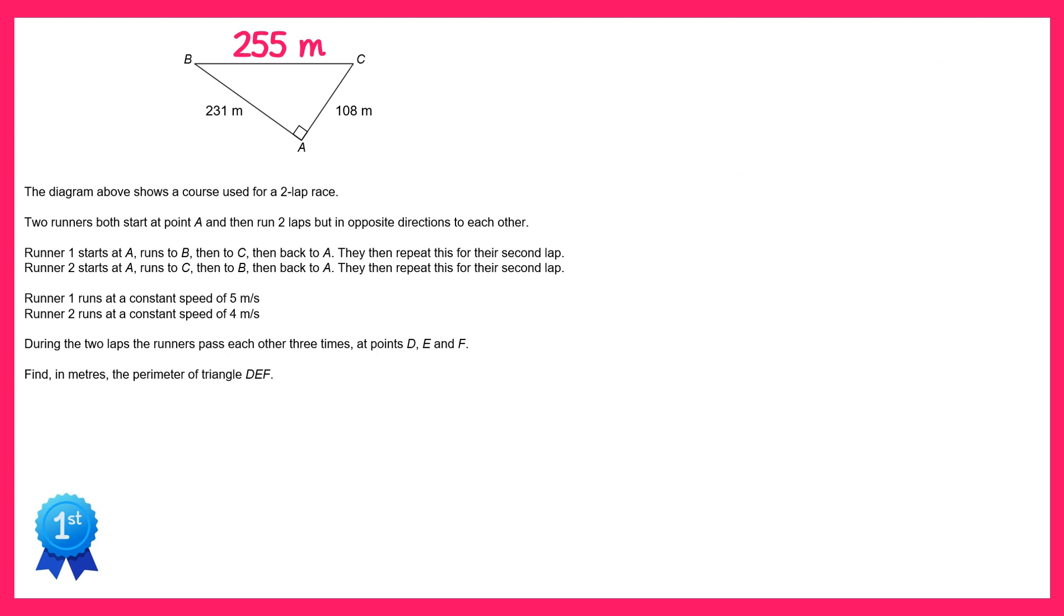If we now add up all of the lengths of the perimeter of the triangle we get the total length of one loop of the race. So 255 plus 231 plus 108 gives you a total perimeter of this triangle of 594 metres.